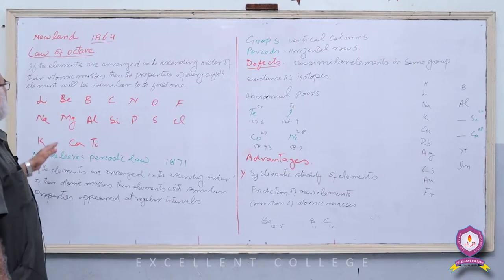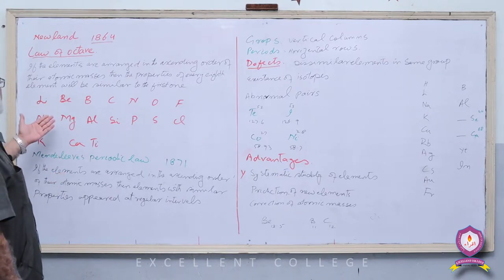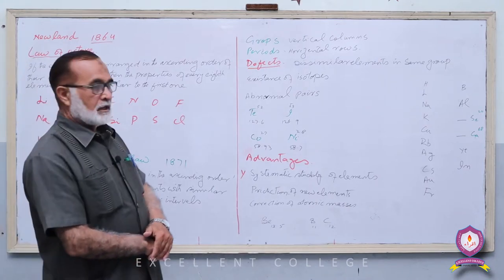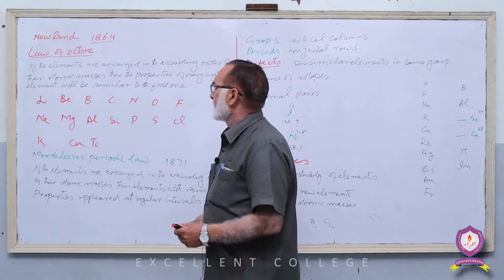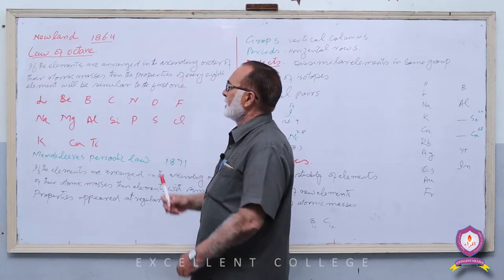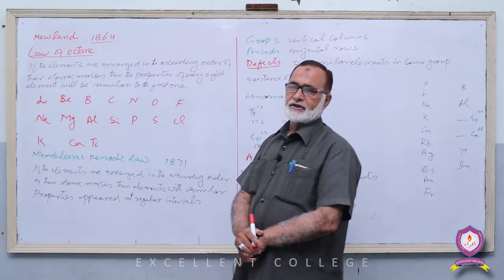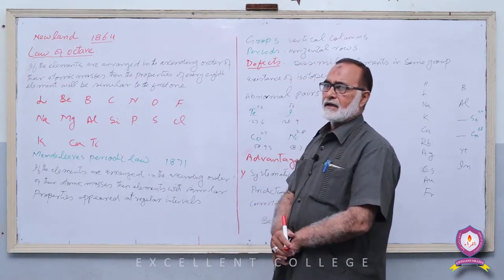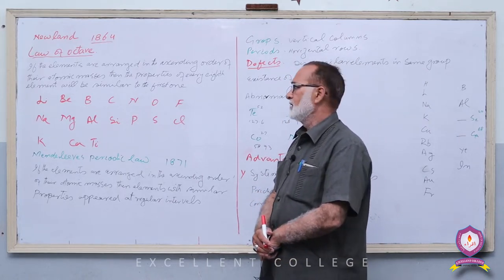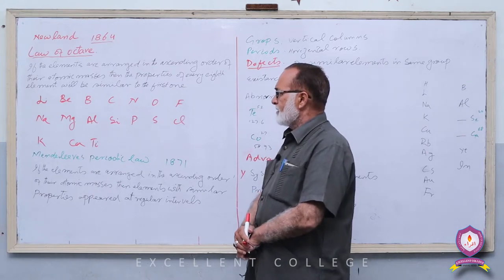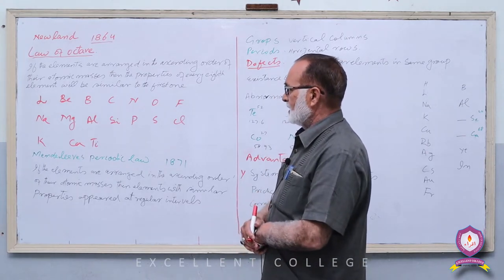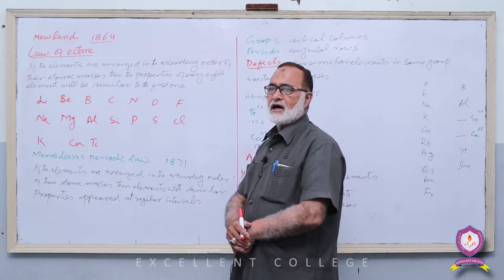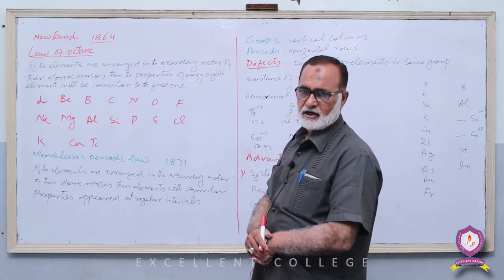تو ہم نے دیکھا: سب سے پہلے Al-Razi، پھر Dobereiner — اب تیسرے نمبر پر آتا ہے Newlands۔ Newlands نے elements کو ان کے atomic mass کی بنیاد پر ترتیب دیا، آٹھ آٹھ کے groups میں، اور جو law پیش کیا اسے Newlands' Law of Octaves کہتے ہیں۔